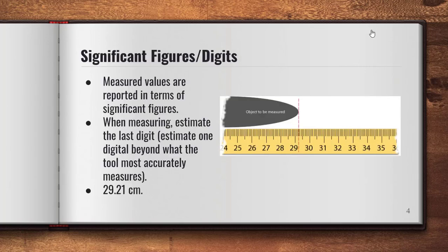Anytime we measure something there is always a degree of uncertainty in terms of accuracy, and that's when we use significant digits. When we measure something using a tool, we always want to estimate that last digit — that is, we go one decimal point beyond what the tool can most accurately measure. If we look at the example in the picture, this particular ruler measures in centimeters, and the most accurate we can measure is to the tenths place.